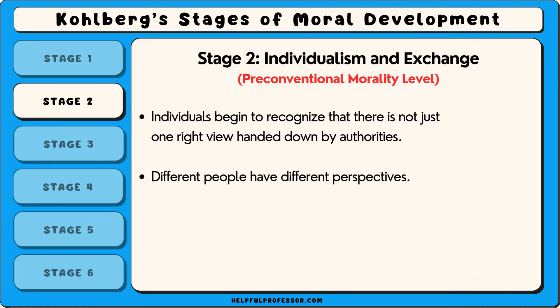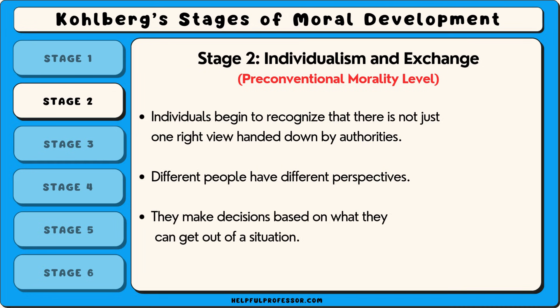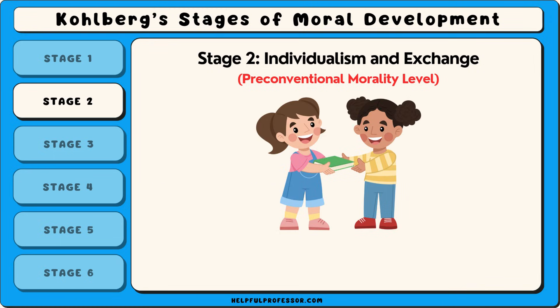Instead, they realise that different people have different perspectives, and moral decisions can be based on individual needs. People at this stage might make decisions based on what they can get out of a situation. For instance, a child might share their toys with a friend...